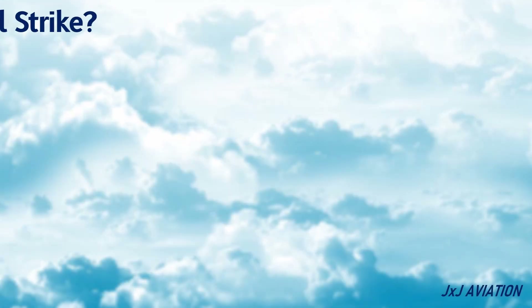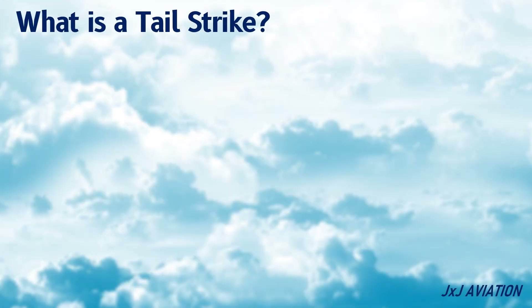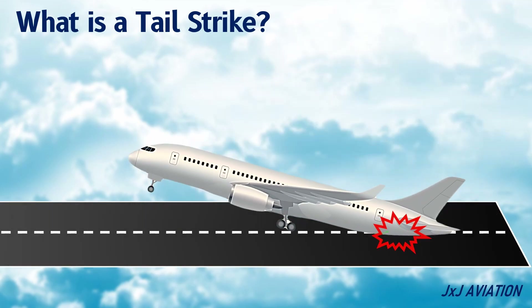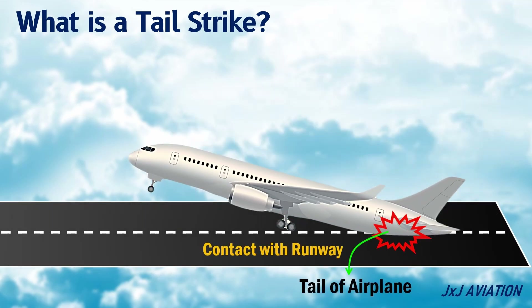What is a tail strike? A tail strike occurs when the tail of an airplane, or the aft fuselage, comes in contact with the runway or the ground. A tail strike may occur during takeoff or landing.